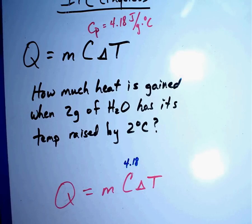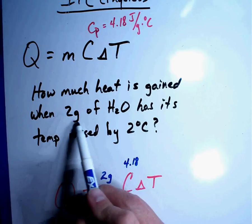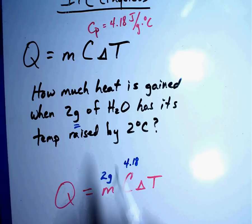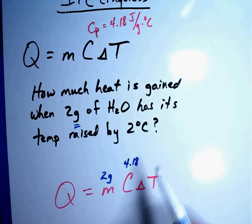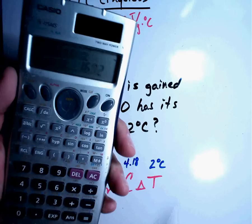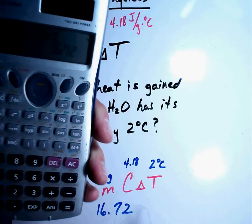Let's see what else they told us. How much heat is gained when 2 grams, there's my mass, 2 grams. Grams is the unit of mass of water when its temperature is raised by 2 degrees Celsius. Well, they told us the specific heat of water. That's why we put that there. Raised by 2 degrees Celsius. Change in temperature was 2 degrees Celsius. Well, we have all of our numbers. There's my question mark. All I have to do is number times number times number. So let's multiply it out and see what we get. 2 times 4.18 times 2. My answer, 16.72.